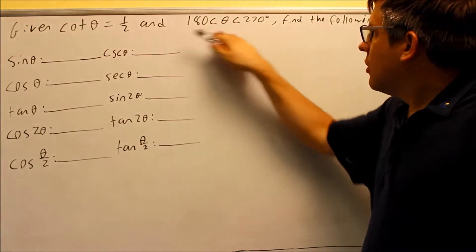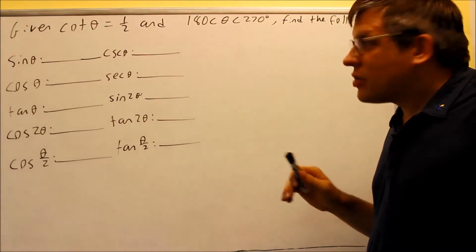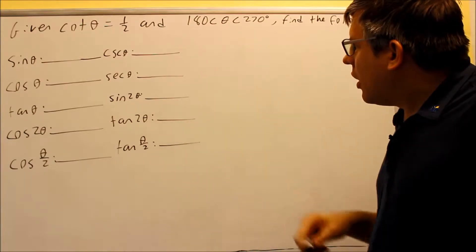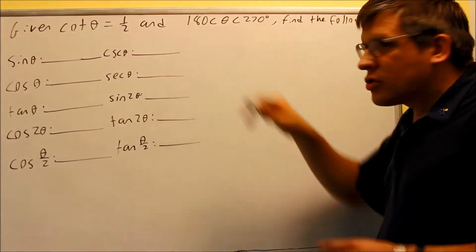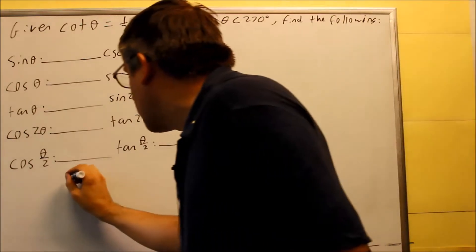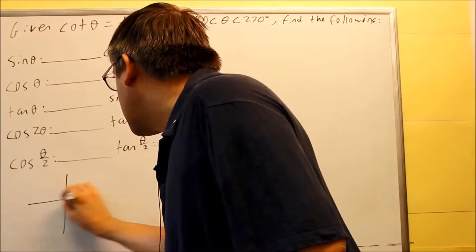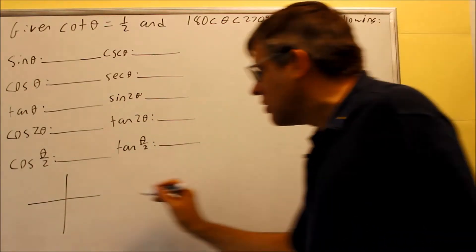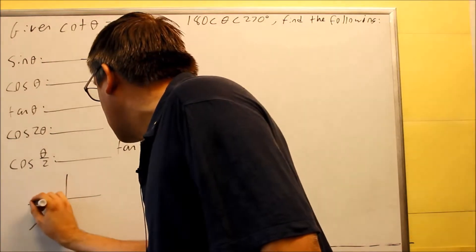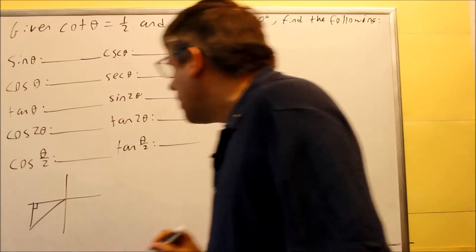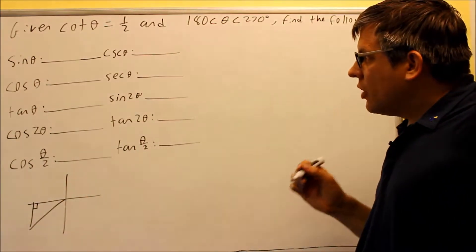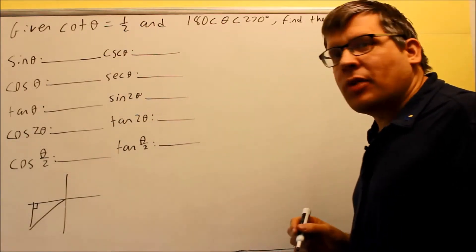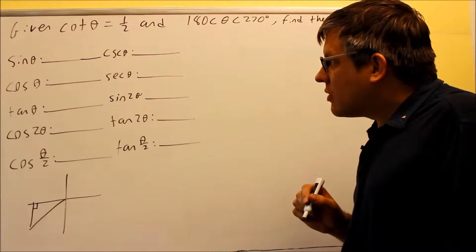We also have our quadrant that they tell us this triangle is going to be in, so we want to draw the triangle in the quadrant that goes along with this. We're between 180 and 270, that would be the third quadrant, so I'm going to draw it down here in the third quadrant. Now we're going to use the definition for cotangent to fill in the sides of my triangle.